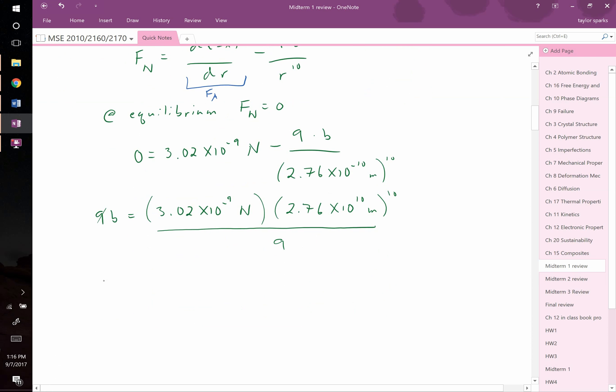When I plug those values in, I find that B is equal to 8.59 times 10 to the negative 106th power, and the units are going to be newtons times meters to the 10th. So now we have an expression for B.